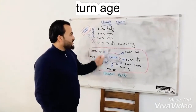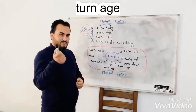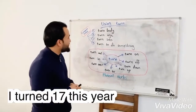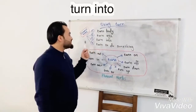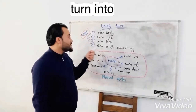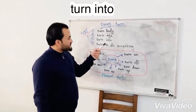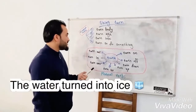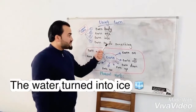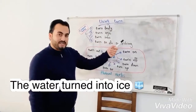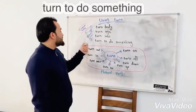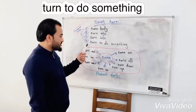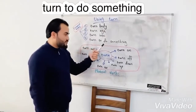Number two: turn age. For example, 'I think you are almost 17, right?' 'Yes, I turned 17 this year.' Number three: turn into — means change. For example, 'The water turned into ice.'